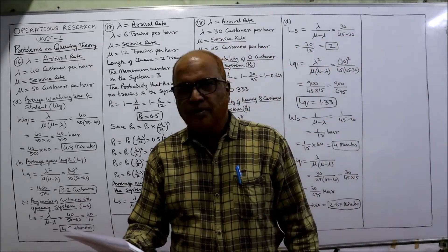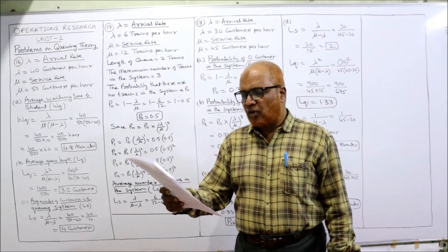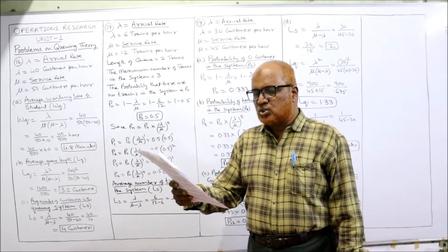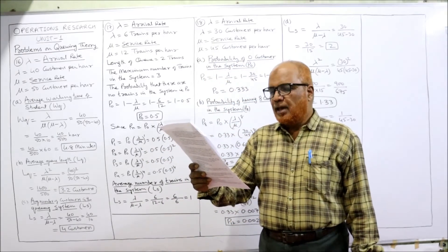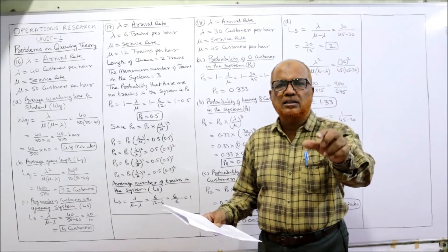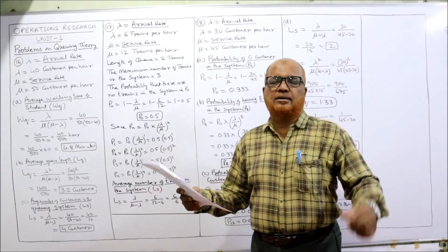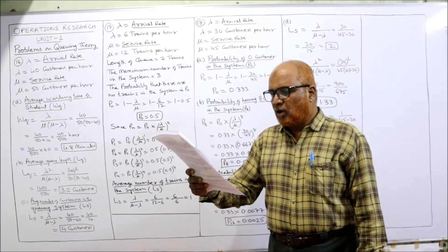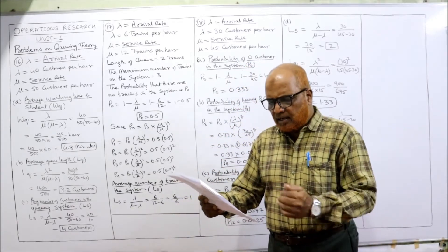Now see the 16th problem. Students arrive at the head office of Universal Teacher Publications according to a Poisson input process with a mean rate of 40 per hour — so the arrival rate λ is 40 students per hour. Time required to serve a student has an exponential distribution with a mean of 50 per hour, so μ is 50 students per hour. Three questions are asked: average waiting time in the queue WQ, average queue length LQ, and average number of students in the system LS.